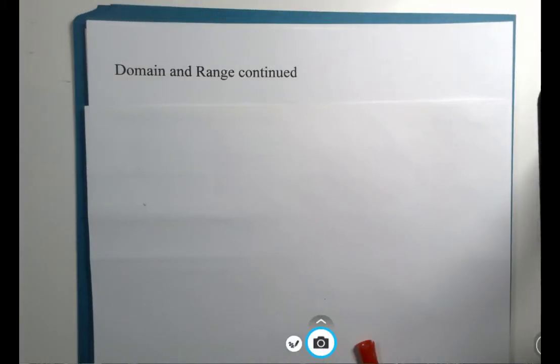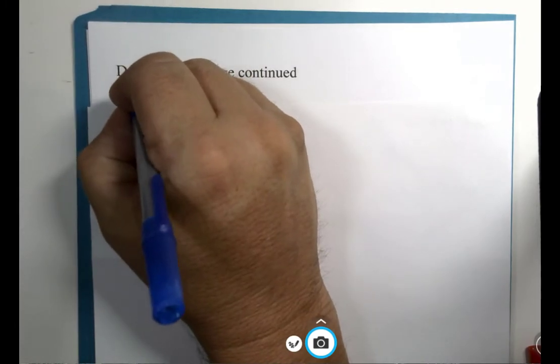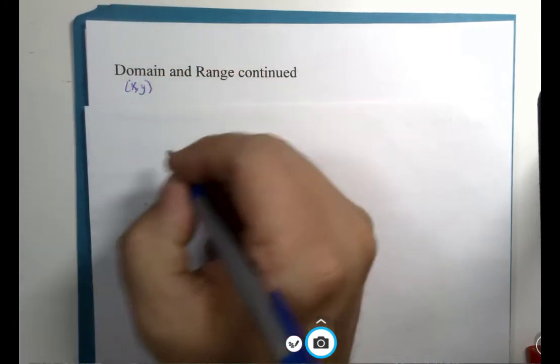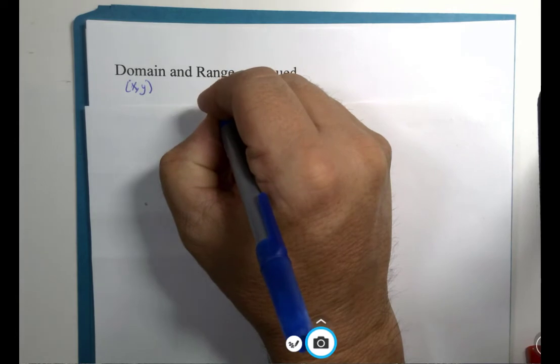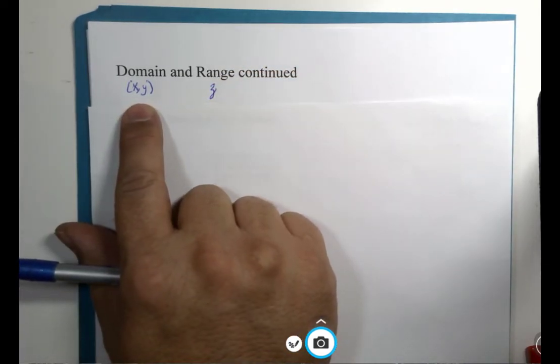Now, where were we? Ah, yes. We were investigating the domain, which would be the inputs, and the range, which would be the outputs of, in particular, functions with two variable inputs.